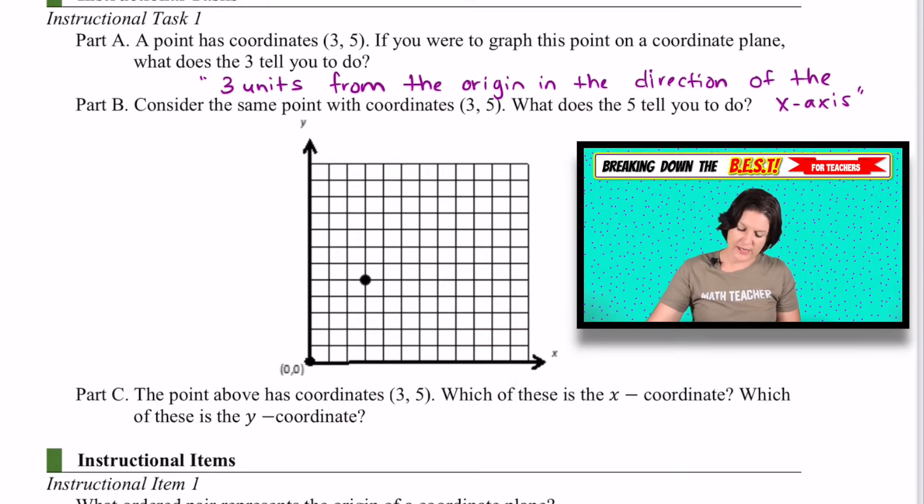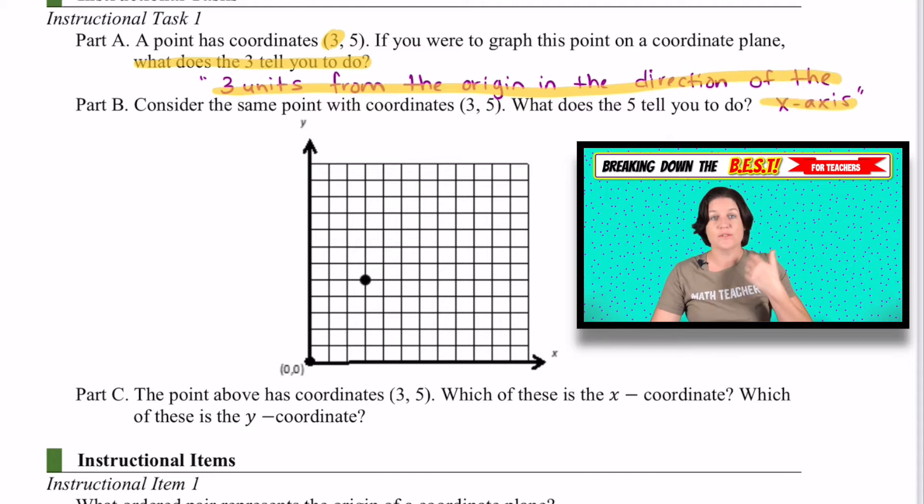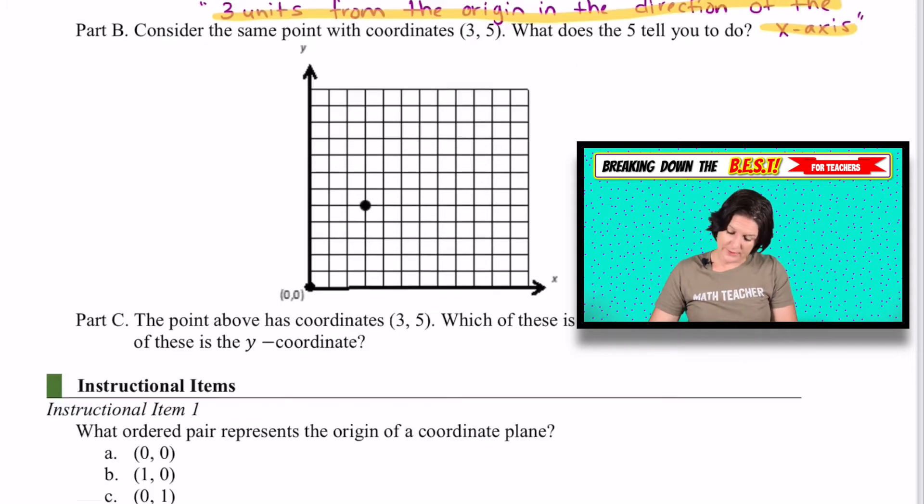Here's an instructional task. So we've got this point with a 3 right here and the question is saying, what does the 3 tell you to do? So in this case, it would be that it tells you to go 3 units from the origin in the direction of the x-axis. So it's teaching them that kind of vocabulary, which we definitely do in taking on the best.